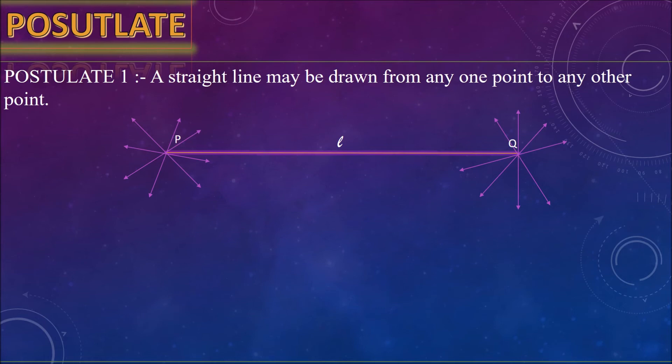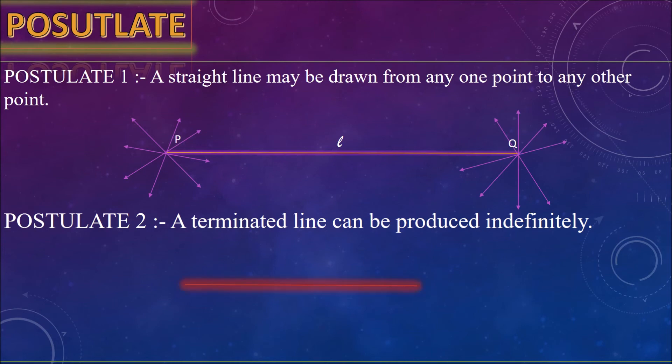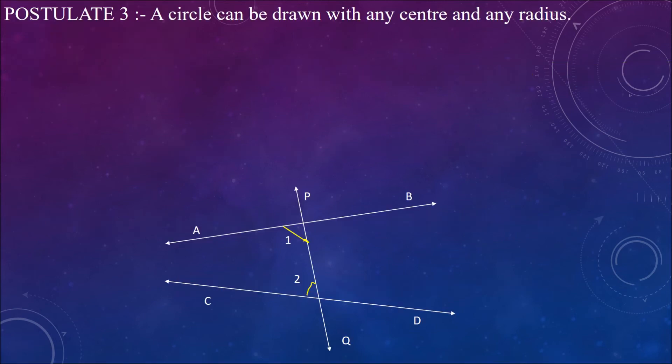Now comes the second postulate. It states that a terminated line can be produced indefinitely. Here we have a terminated line and we can produce it indefinitely in both the directions. Third postulate states that a circle can be drawn with any center and any radius. This is self-explanatory; we can draw any circle with any radius.